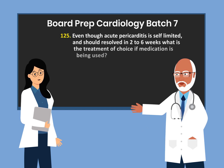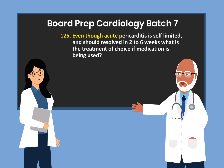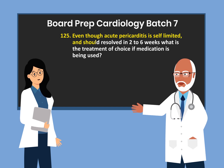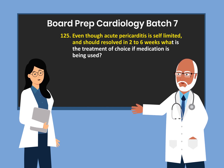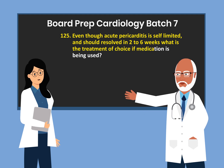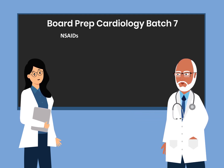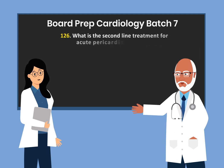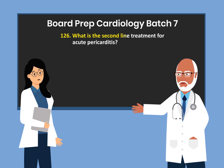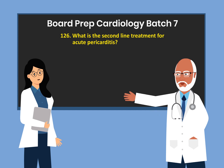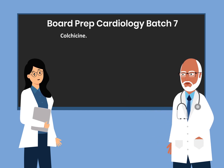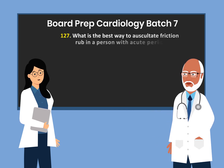Question 125. Even though acute pericarditis is self-limited and should resolve in two to six weeks, what is the treatment of choice if medication is being used? NSAIDs. Question 126. What is the second line treatment for acute pericarditis? Colchicine.